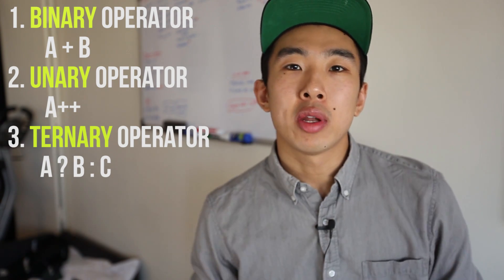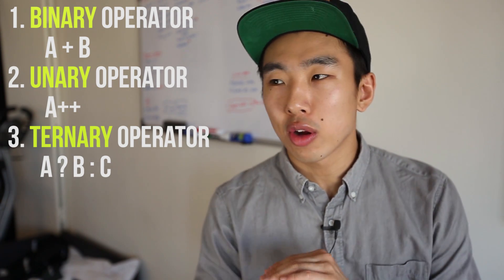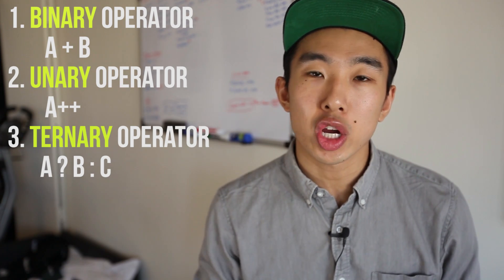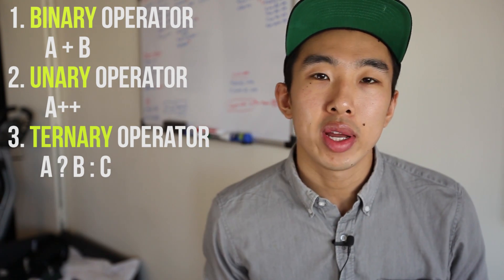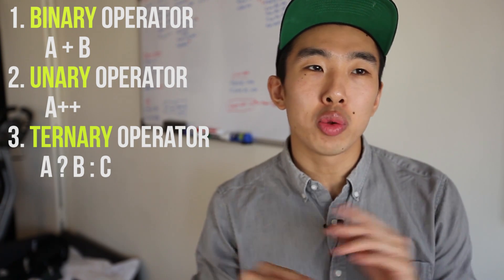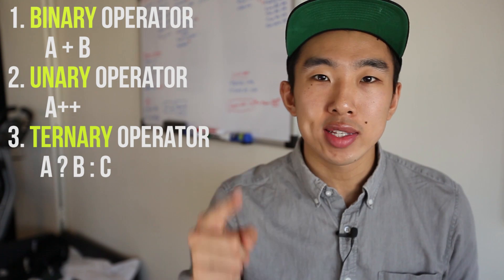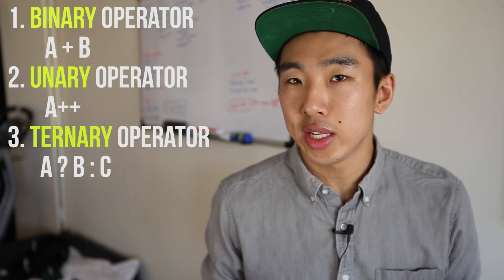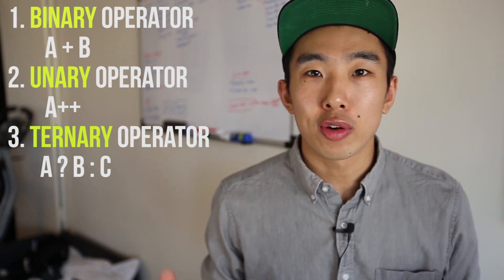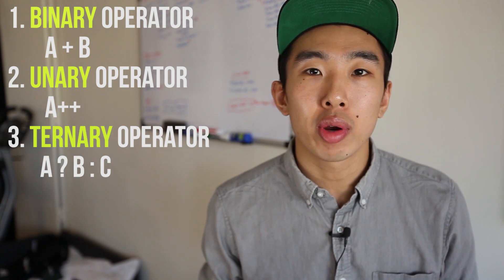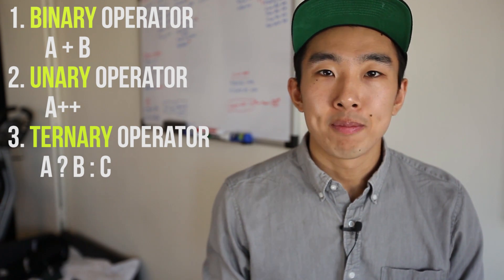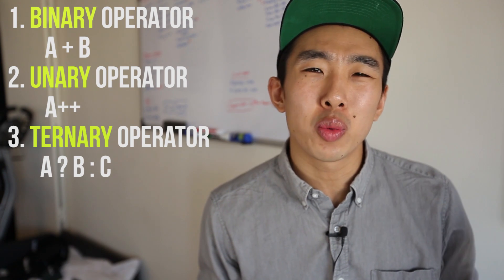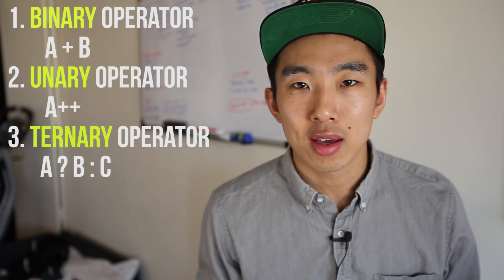The next word you'll hear sometimes is unary operator. These are the plus-plus, or pre/post-increment operators, and they operate on one operand — that's why it's called unary. Last but not least, we have ternary operators, which are much more rare and operate on three operands. There's really only one used in practice, and it's simply referred to as the ternary operator.